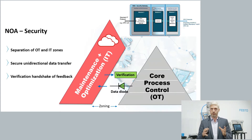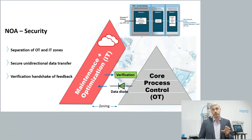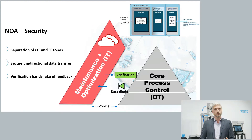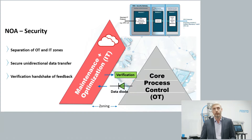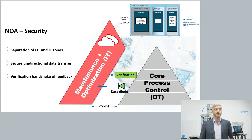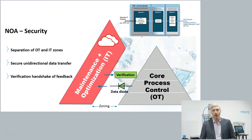An example implementation uses a three-module component: Module 1 has a bidirectional communication interface to core process control, actively pulling required data. Module 2 is not configurable — it simply receives data from Module 1 and passes it to Module 3. Module 3 has a bidirectional communication interface providing NOA information model data via OPC UA to the maintenance and optimization applications. Additional security requirements follow the IEC 62443 standard, and a specific verification process is required when feeding insights from the IT domain back to core process control.